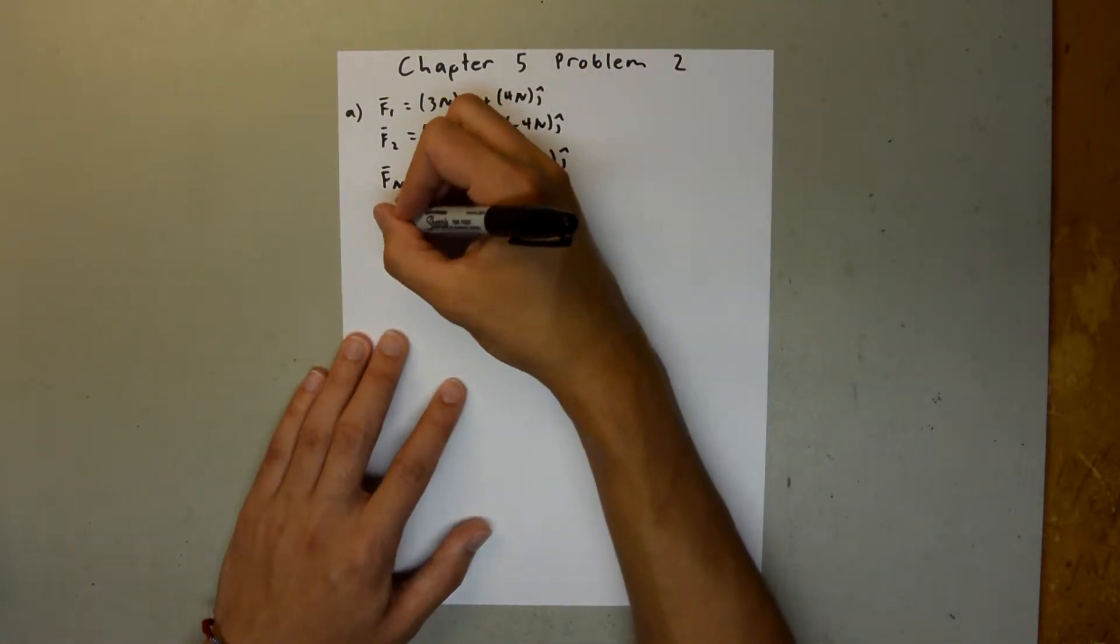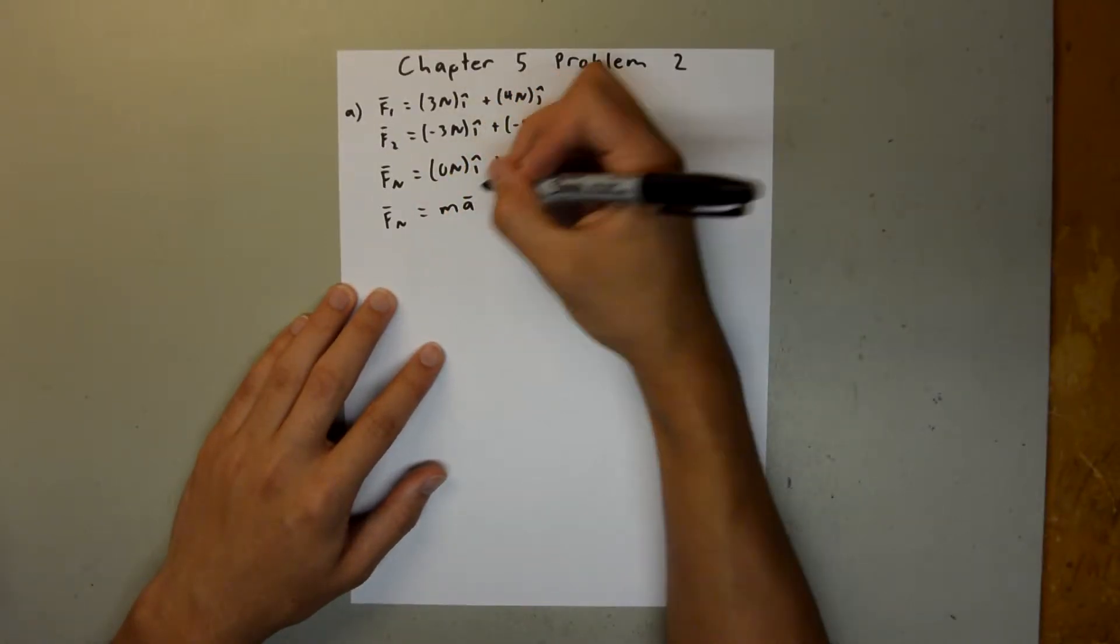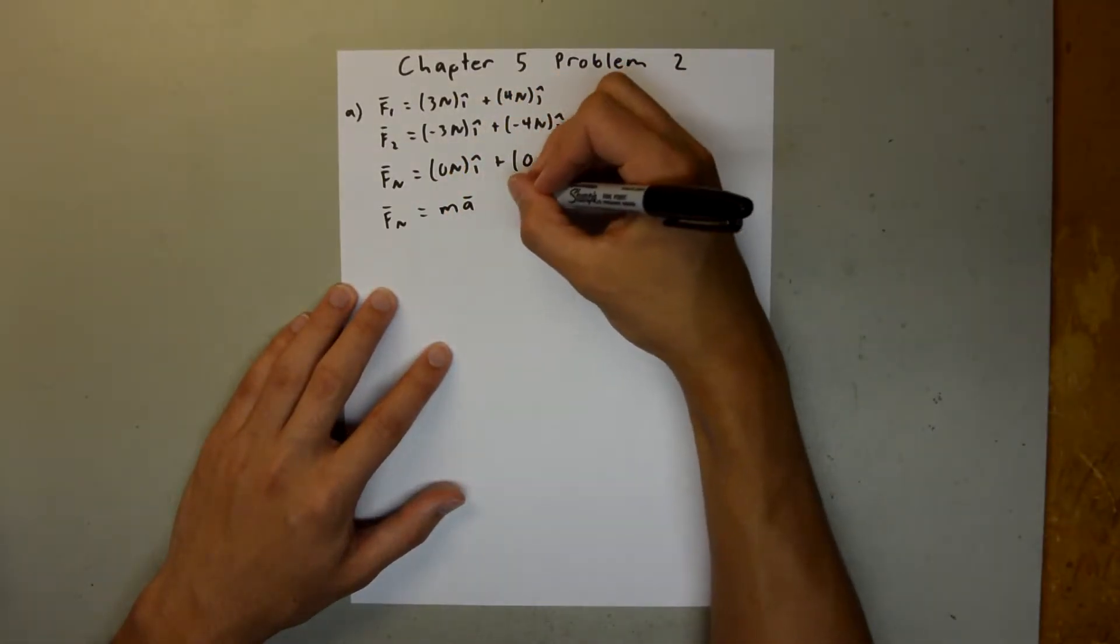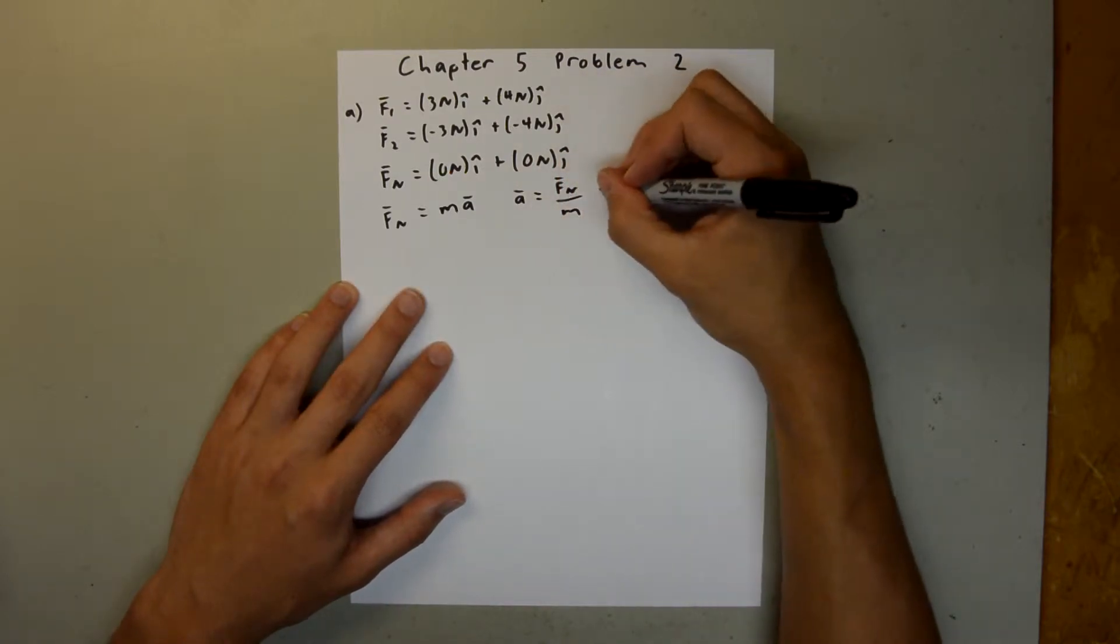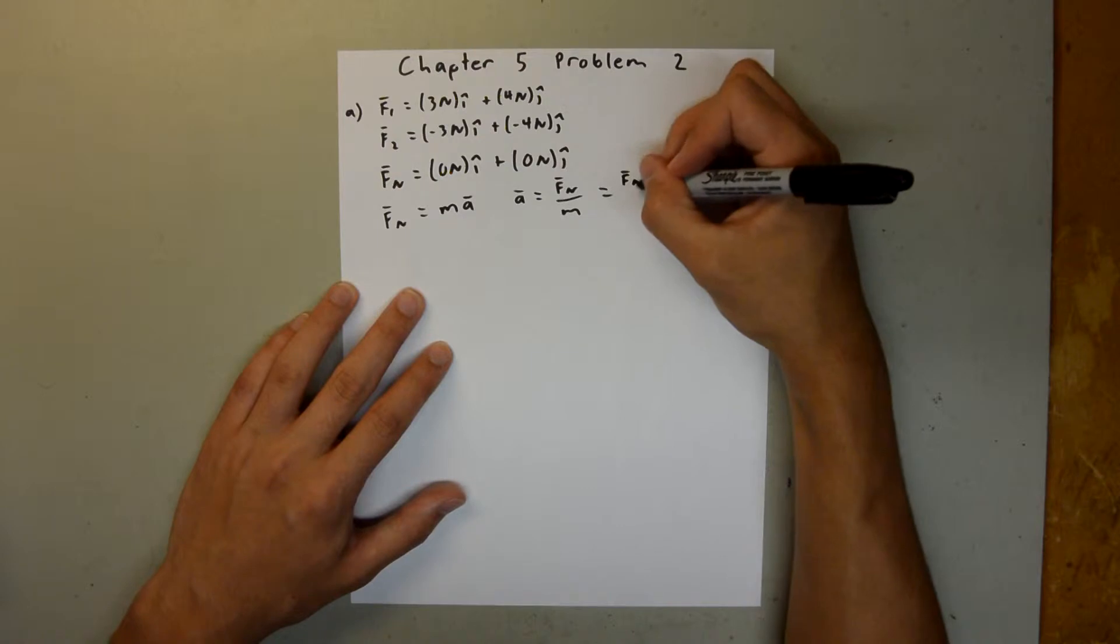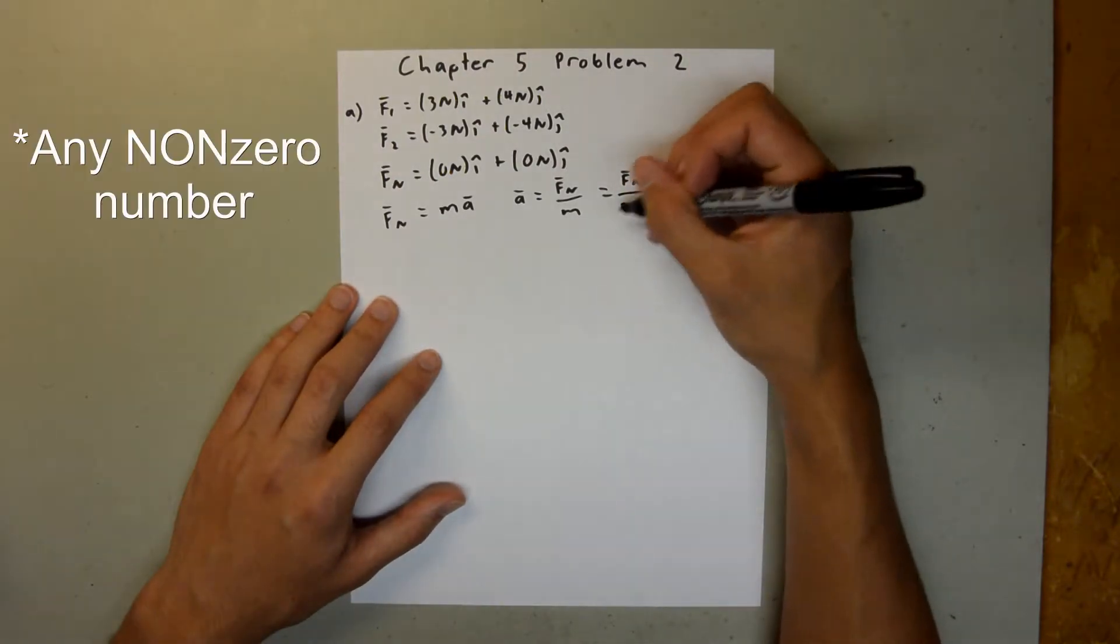And so, we know that this net force is going to be equal to ma, and we can rearrange this for a, and say a is equal to fn over m. So, this is equal to fn over 2 kilograms. But we know that 0 divided by any number is still 0.